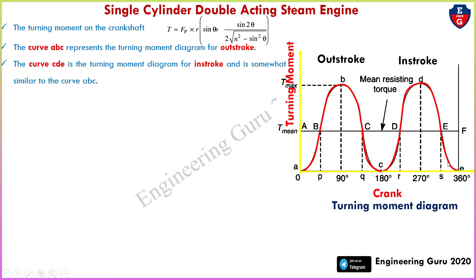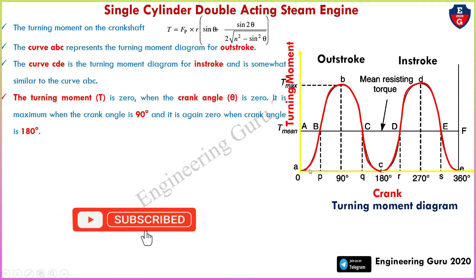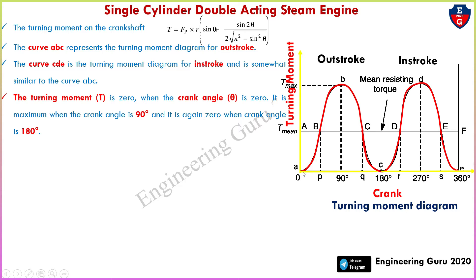Curve C-D-E is somewhat similar to curve A-B-C. The turning moment T is zero when the crank angle θ equals 0°. It is maximum when the crank angle is 90° — that is point B — and it is again zero when the crank angle is 180°. From this diagram we can see that the turning moment is zero at 0°, 180°, and 360°, and maximum at 90° (point B) and 270° (point D).